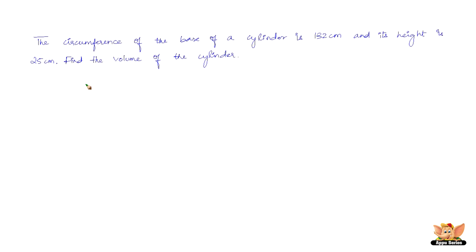This is another very simple problem. We have the volume of the cylinder as πr²h. Now here we have the circumference as 132 cm and we have the height. So we have h and we have π. We just need to find r which we can find out from this data.